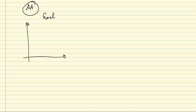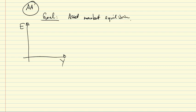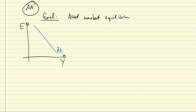In this clip we're going to discuss asset market equilibrium in an open economy. The goal is to derive a relationship between the exchange rate and the level of output that describes asset market equilibrium — financial market equilibrium in an open economy. We're going to derive the AA curve as a downward sloping curve in E-Y space, and all that follows will give us the reasons why this curve looks like that.